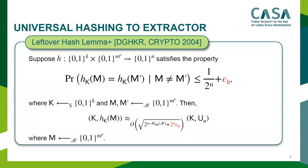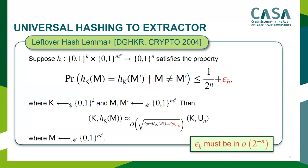The collision probability is slightly more than one over two to the n by epsilon_h. As long as epsilon_h is small and the input has sufficient min-entropy, the output distribution will be close to uniform. We want epsilon_h to be much less than one over two to the n.